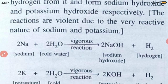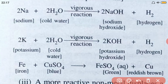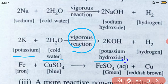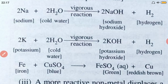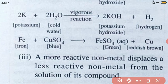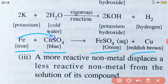Similarly, potassium reacts with cold water in a vigorous reaction to give potassium hydroxide along with hydrogen gas. Another example: iron reacts with copper sulfate — iron, being much more reactive than copper, displaces copper to form iron sulfate, and copper is deposited. Iron replaces copper and takes the sulfate with it.